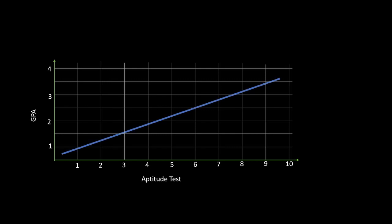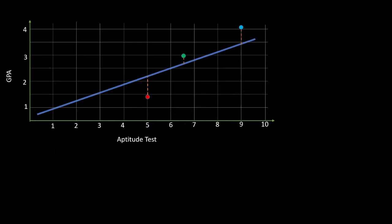We've got our slope, our line, and we look at these points looking for changes: delta one, delta two, and delta three. There's a mathematical equation that talks about how to process that data. For the most part, don't focus too much on that fancy looking equation — I want to keep this practical. Looking at the same points, same scale, same graph, we see this same slope equation.